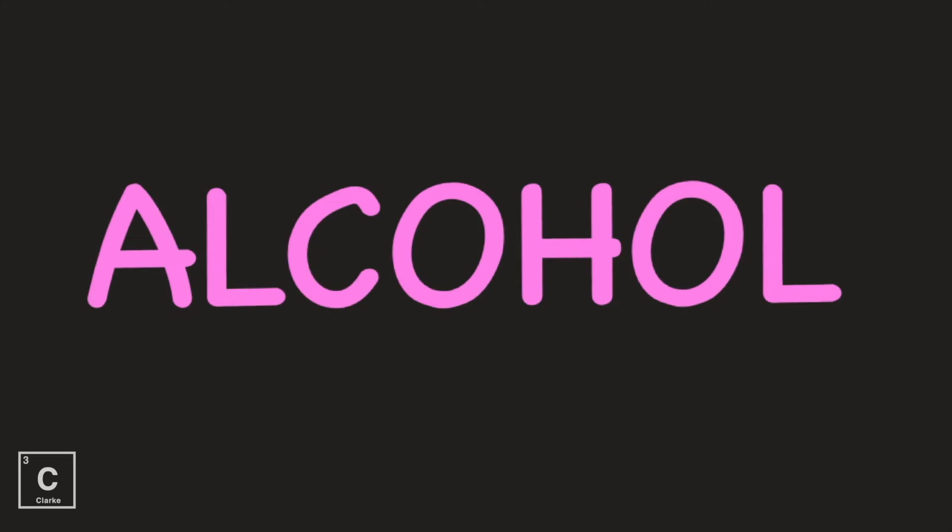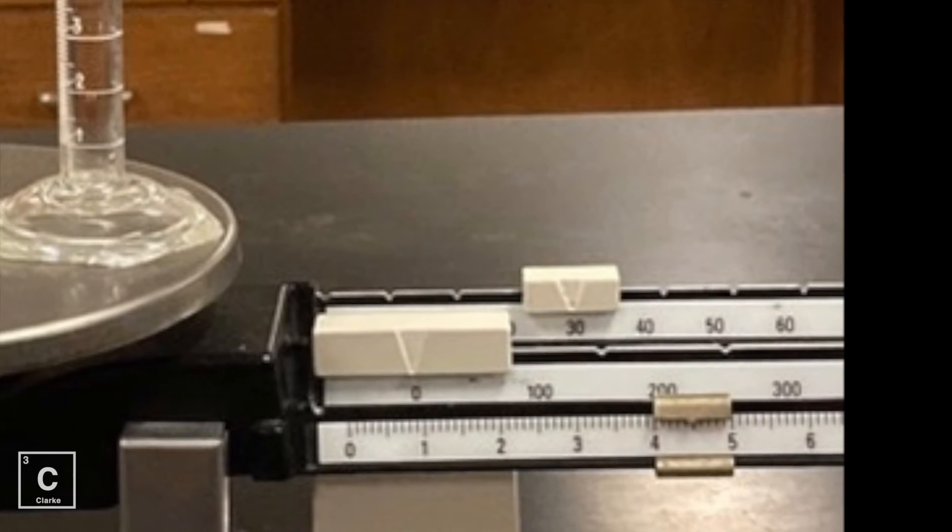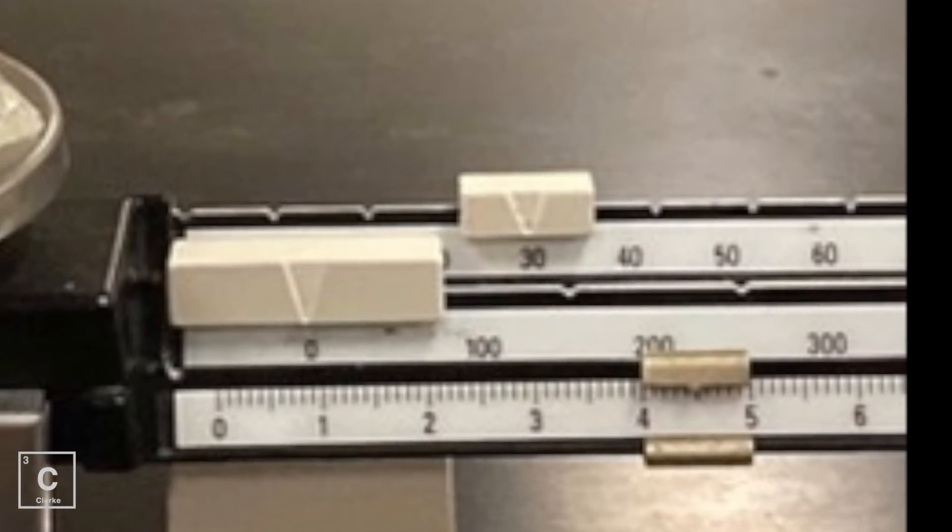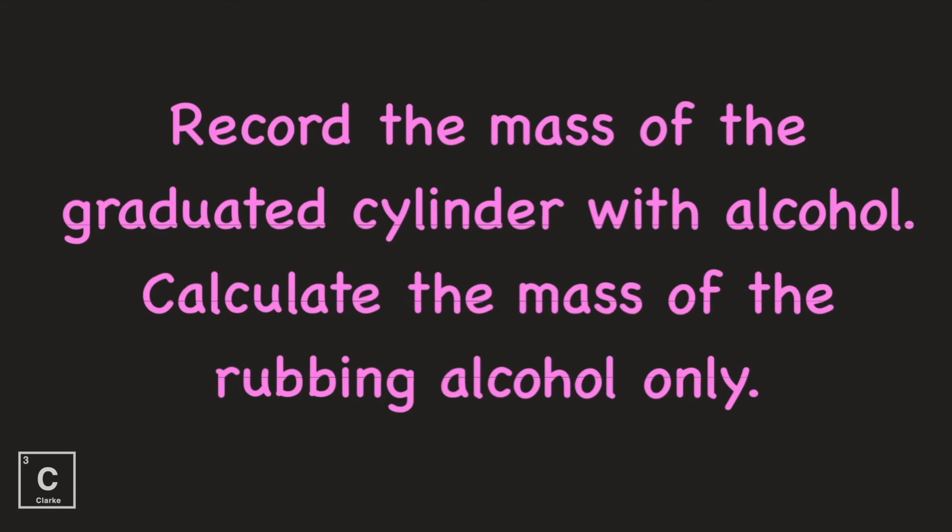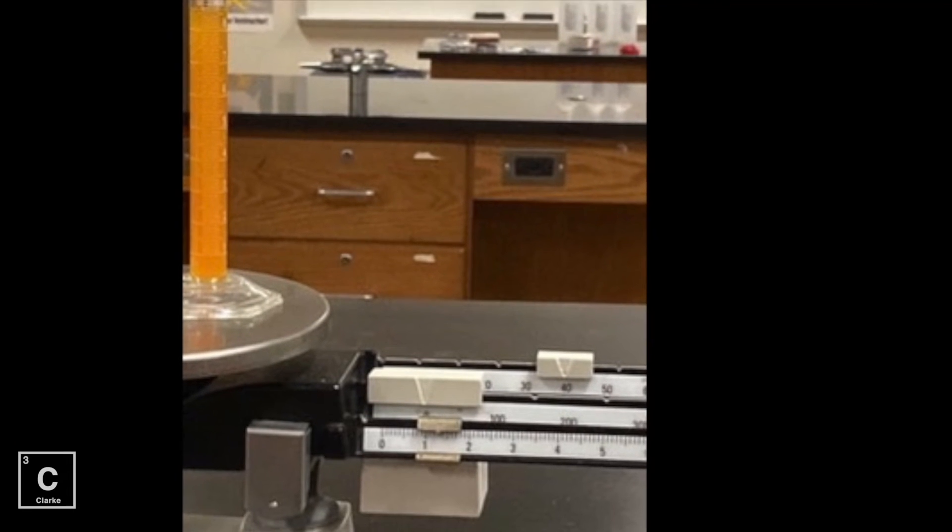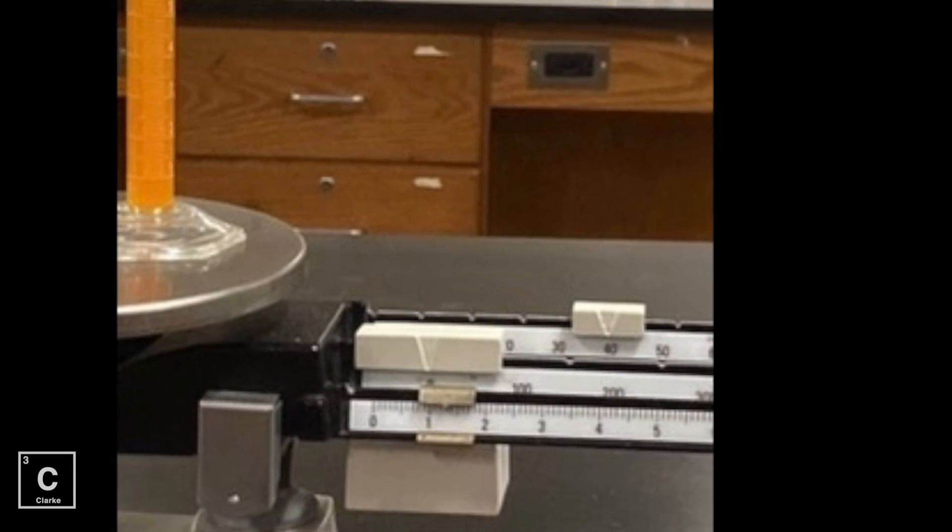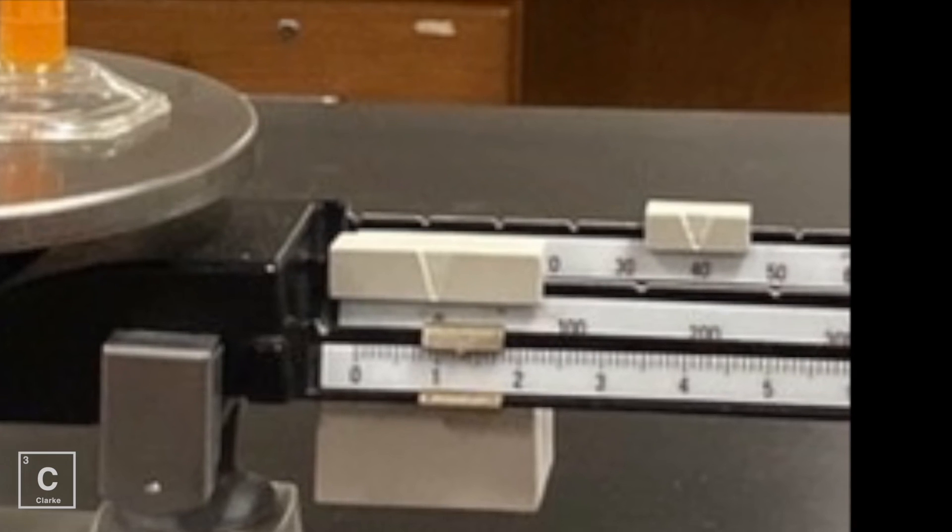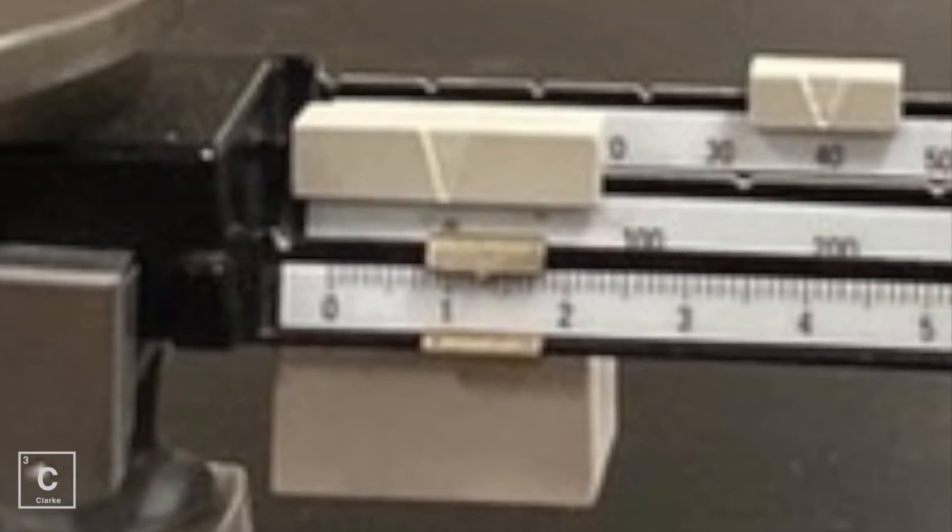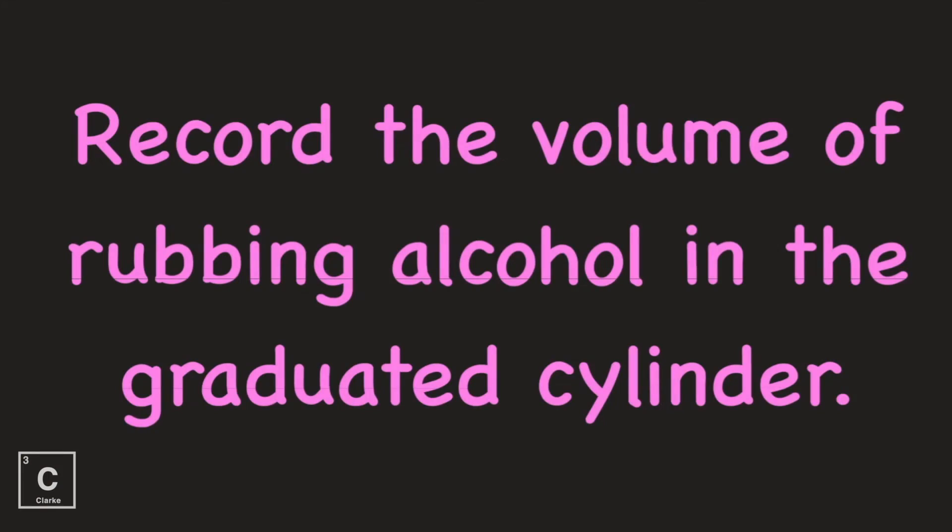And our last substance to get the density for is alcohol. Rubbing alcohol. Record the mass of the empty graduated cylinder. Record the mass of the graduated cylinder with alcohol, then calculate the mass of the rubbing alcohol only. Record the volume of rubbing alcohol in the graduated cylinder.